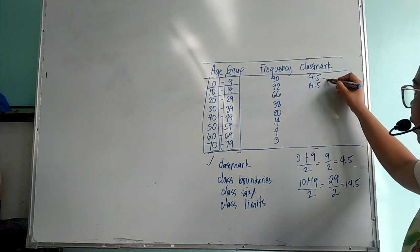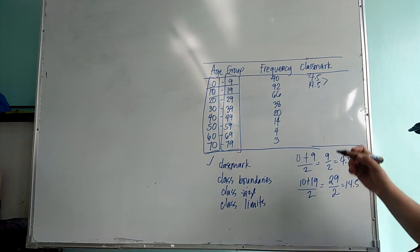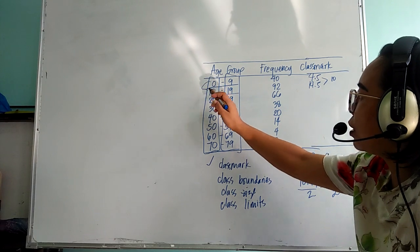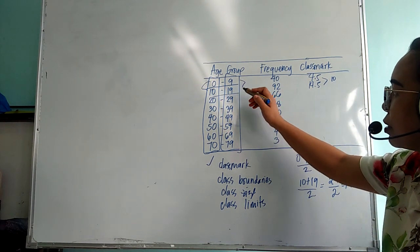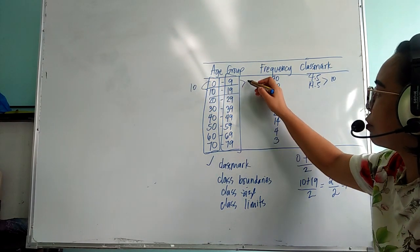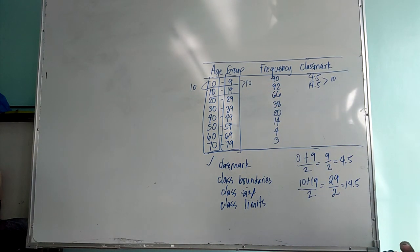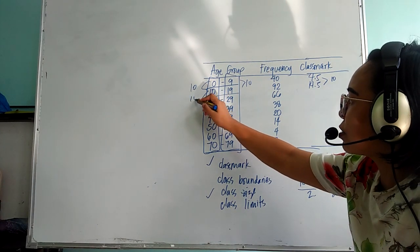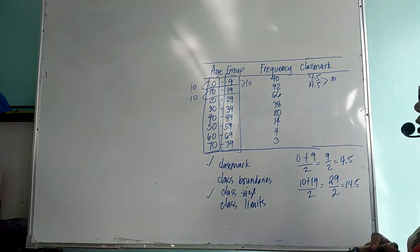So you will notice that there is an interval of 10. And if you will also notice the lower limits and the upper limits, it has also an interval of 10. That interval is what we call the class size. So this is an example of a grouped frequency distribution with equal class size.